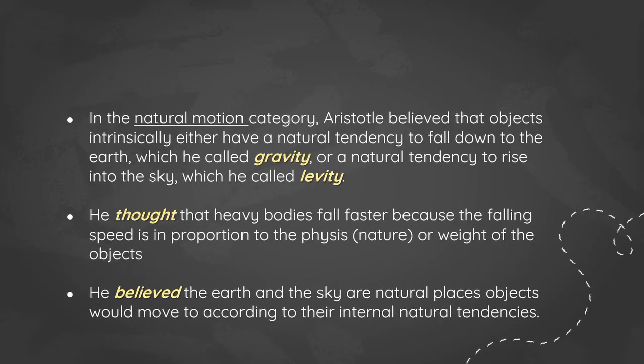In his natural motion category, he believed that objects intrinsically either had a tendency to fall — which he called gravity — or a tendency to rise into the sky — which he called levity. He thought that heavy objects fall faster because the falling speed is in proportion to the nature or weight of the objects. He believed that earth and the sky are natural places objects would move according to their internal natural tendencies.